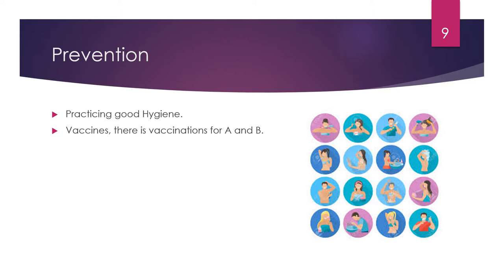Prevention includes practicing good hygiene — making sure to wash uncooked foods like shellfish and chicken, and washing your fruits and vegetables. Make sure you're washing your hands to prevent fecal-oral cross-contamination. Also, not sharing drugs or needles, and not sharing razors or someone else's toothbrush.